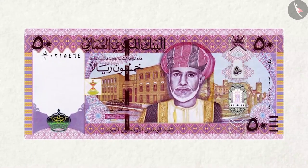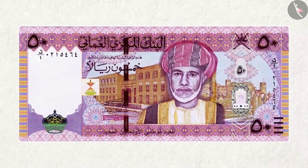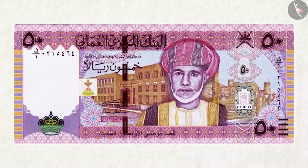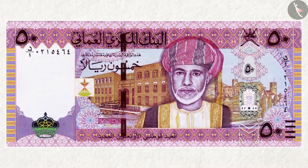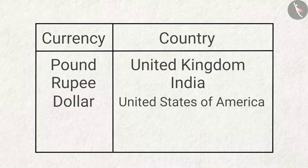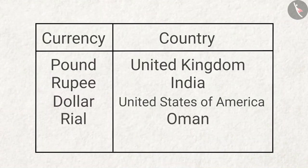Grandpa shows a red-colored note and asks: 'This red colored note belongs to which country? By what name is it known?' Answer: This note belongs to Oman and it is named the rial.